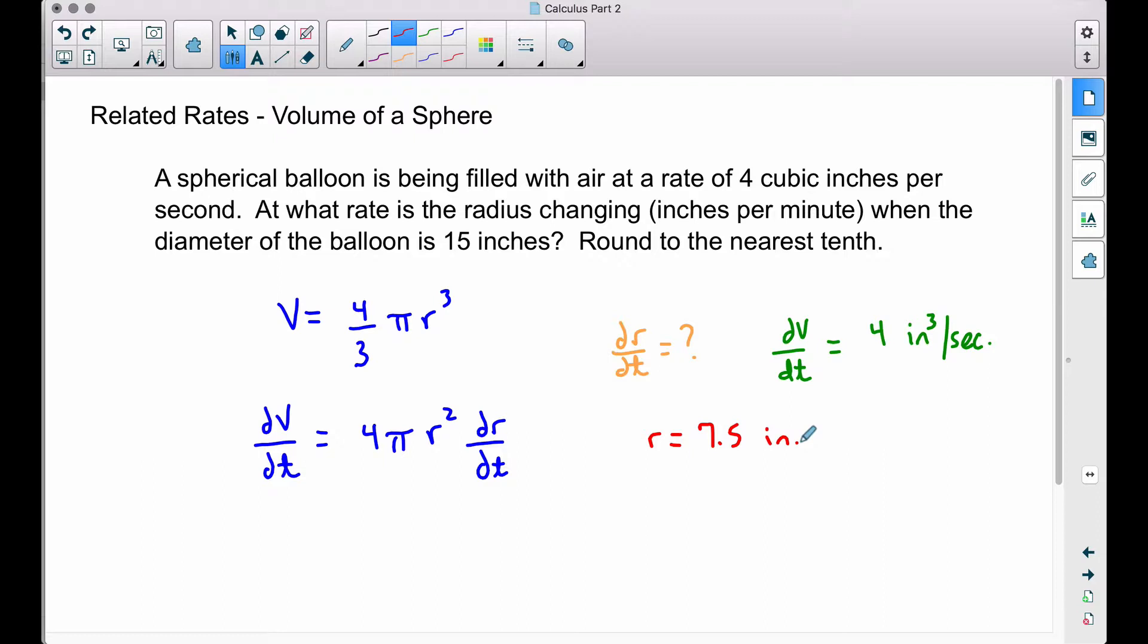Now let's be very careful with this problem. We have the rate of change of volume in cubic inches per second, but we want to find the rate of change of the radius in inches per minute. We'll come back and address that towards the end of the problem.